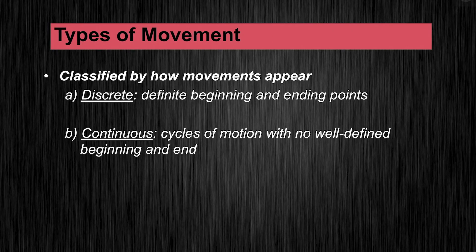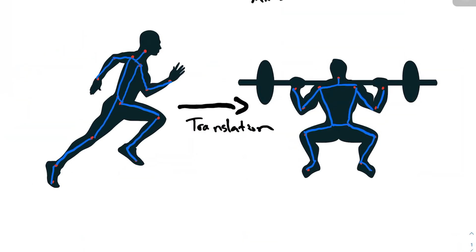As biomechanists, we have many different ways of distinguishing between different types of movements. A discrete movement has very definite beginning and ending points, whereas continuous movement cycles through motion with really no well-defined beginning or end. Running would be a continuous movement. Whereas squatting — because you have a definite beginning and end, you start with the bar on your back and you end either standing up or failing — that would be a discrete movement.